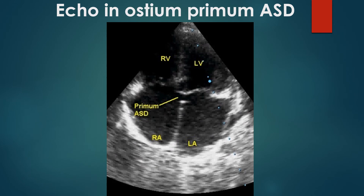Echocardiogram in apical 4-chamber view demonstrating a primum atrial septal defect. Primum ASD is part of the AV canal defect and is sometimes called a partial AV canal defect. In AV canal defects, the AV septum is absent and both AV valves are at the same level. Primum ASD is usually associated with a cleft of the anterior mitral leaflet, which produces significant mitral regurgitation.